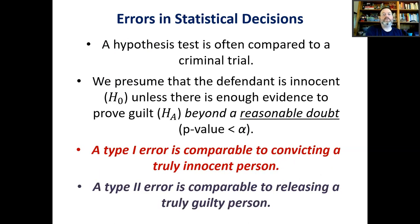A hypothesis test is often compared to a criminal trial. We presume that the defendant is innocent — that's our null hypothesis — unless there's enough evidence to prove guilt, which is our alternative hypothesis. That standard of beyond a reasonable doubt corresponds to a p-value less than alpha.